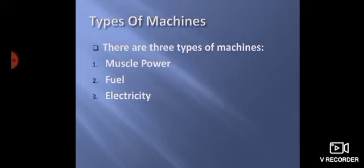Next types of machines. There are three types of machines. Three tarah ki machines hooti hai. First muscle power. Second fuel. Third electricity.